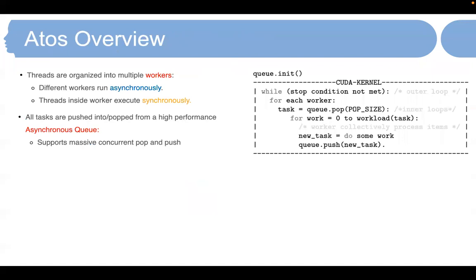In this slide, we want to give an overview of our framework ATOS. In ATOS, CUDA threads are organized into independent workers. Those workers run asynchronously, and the threads within a worker run synchronously. ATOS is essentially a dynamic scheduler built around our high-performance asynchronous queue. This queue is required to support massive concurrent pop and push. In the high level, ATOS maintains a queue of tasks, and workers pop tasks from the queue, process the tasks, and potentially add newly generated tasks back to the queue. The program runs until either a stop condition is met or the queue is empty. The performance of ATOS is largely dependent on the performance of our asynchronous queue, so it has to be high-performing.